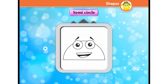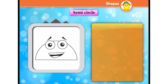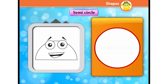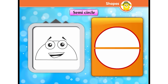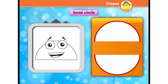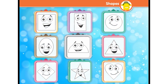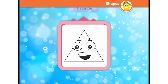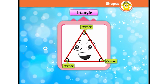I am a semicircle. I am just a half circle, so if you cut the circle into two equal parts, then you will get two semicircles. I am a triangle — I have three corners and three sides.